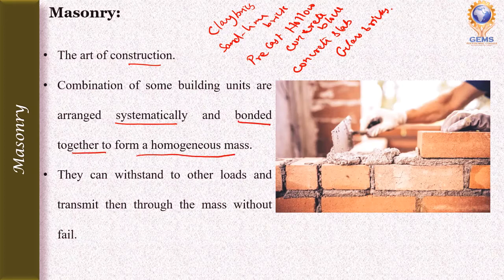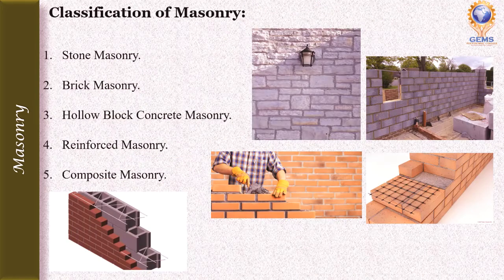When they form a homogeneous mass, then only they can withstand loads and transmit them through the mass without failure or disintegration. The classifications of masonry are: stone masonry, brick masonry, hollow block concrete masonry, reinforced masonry, and composite masonry.